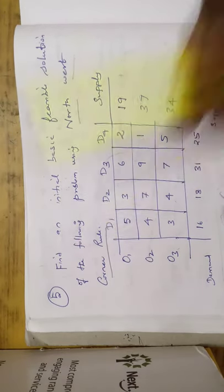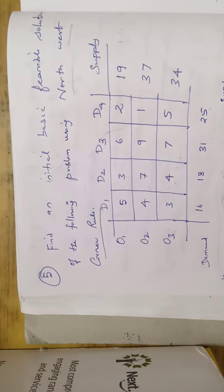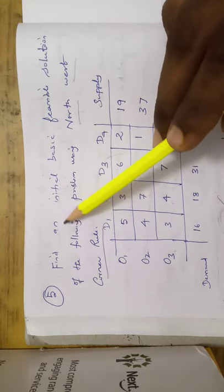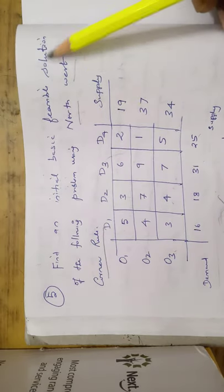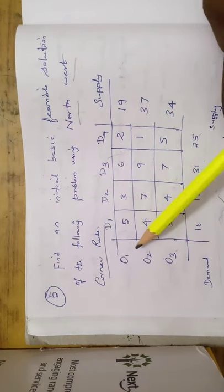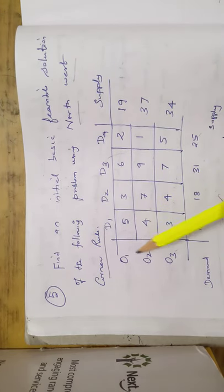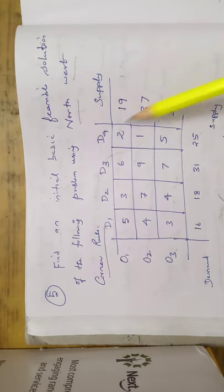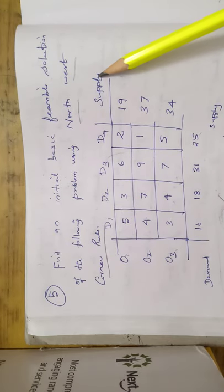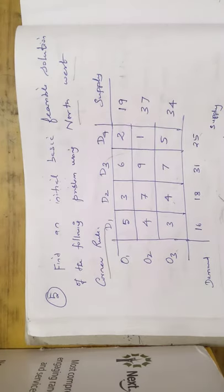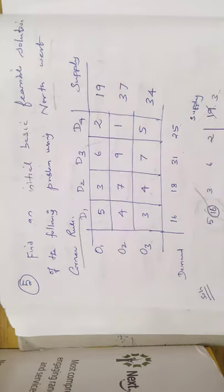Exercise 10.1, problem number 5. Find an initial basic feasible solution of the following problem using the North West Corner method. Three origins are given: O1, O2, O3, and four destinations are given. The cost values, supply values are 19, 37, 34, and demand values are 16, 18, 31, and 25. This transportation problem will be solved by the North West Corner rule.